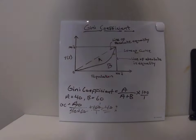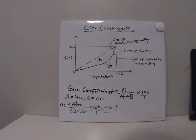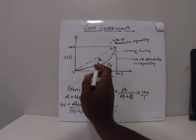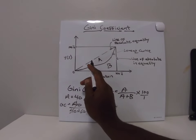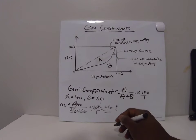So what does that 40 depict? A Gini coefficient of 40 percent shows how distribution of income is distributed within this particular economy — it is not absolutely even, but it's also not at absolute inequality. The further you are away from the line of absolute equality, the higher the Gini coefficient, which indicates more inequality.